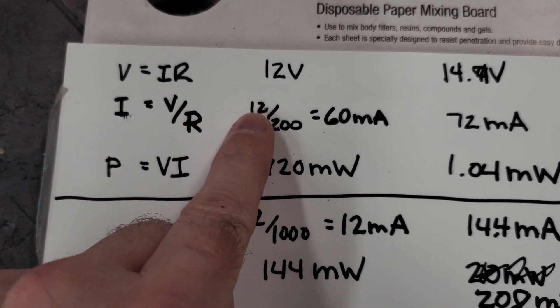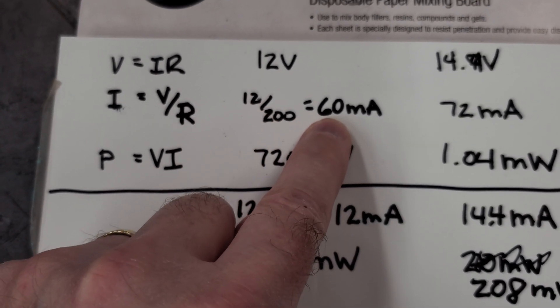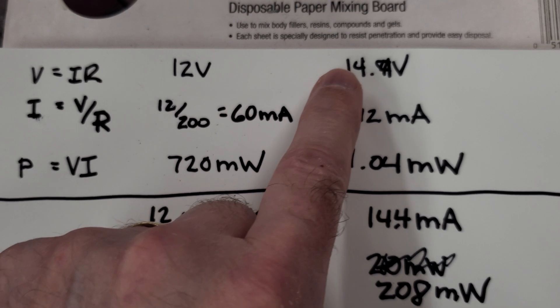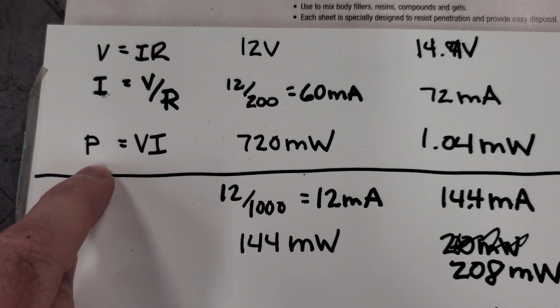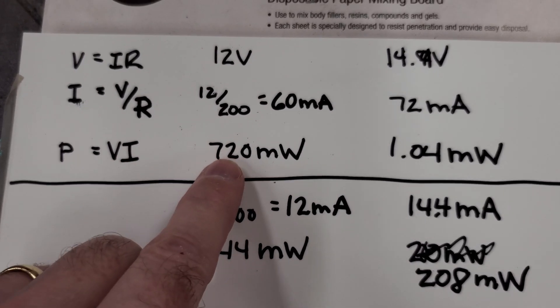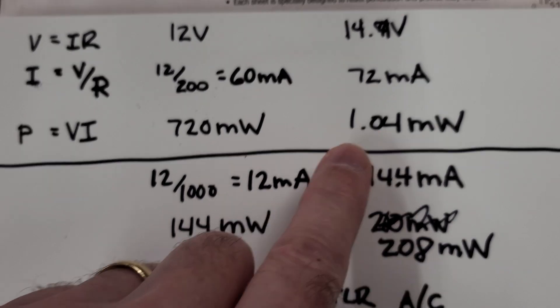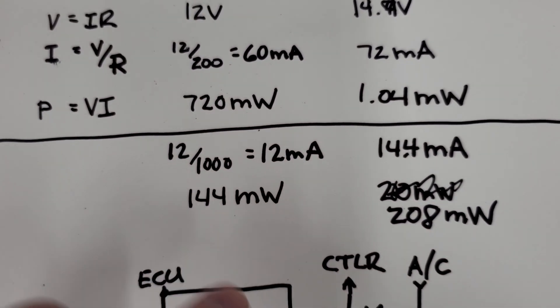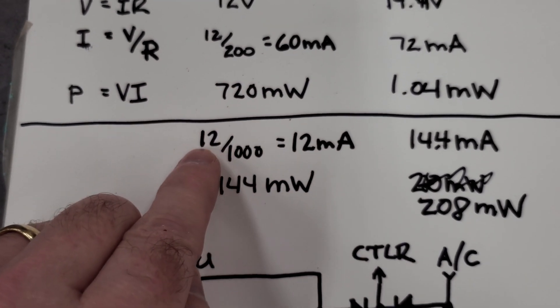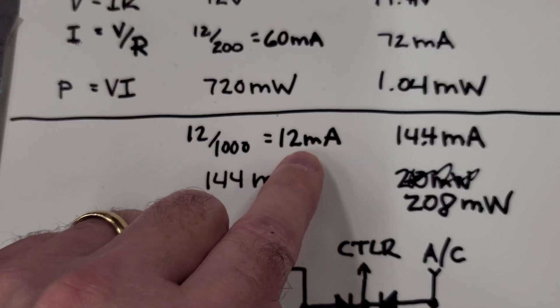For the big resistor we have 12 volts divided by 200 ohms, gets us 60 milliamps. At 14.4 volts that's 72 milliamps. Then you calculate the power is voltage times current, so 720 milliwatts for this one and just over a watt. We went with a 2 watt resistor so we have plenty of headroom on that one.